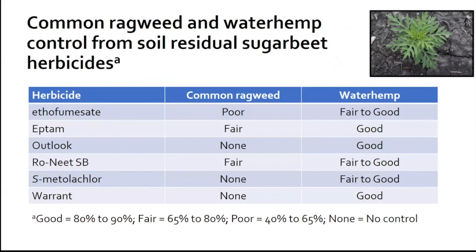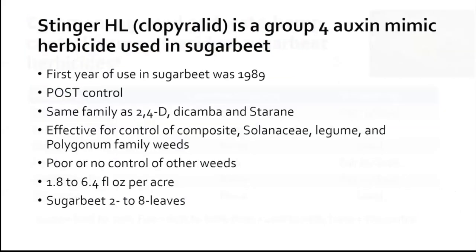So how do we go about addressing this? Stinger HL, also known as clopyralid, is a group 4 auxin mimic herbicide used in sugar beet. It was first used in 1989 as a post-control herbicide in the same family as 2,4-D, dicamba, and starane.